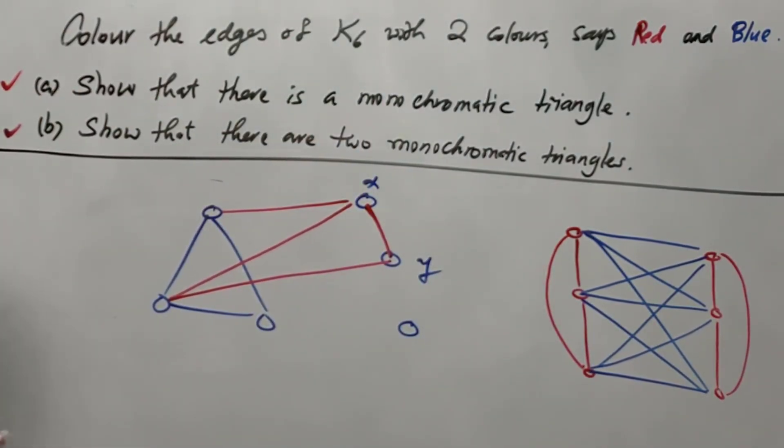To another extreme, how many monochromatic triangles can we have at most? The answer is obvious. Because there is C(6,3), there's 20 triangles that we can find in a K6. If we color all the edges by only one color, say blue, then we have altogether 20 blue triangles.